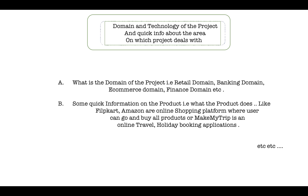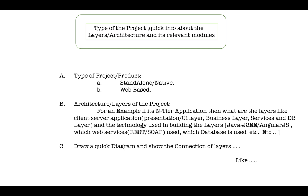Next, talk about the type of the project and the high-level architecture — all the layers involved. The type of the product means whether it is a standalone, native, or web-based product. If it is web-based, mention how many layers are present in the architecture. For multi-tier architecture, you can mention it's a client-server application with a presentation layer (UI layer), a business layer, a services layer, and a DB layer, where web services handle communication between modules.